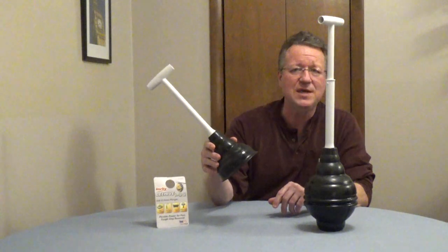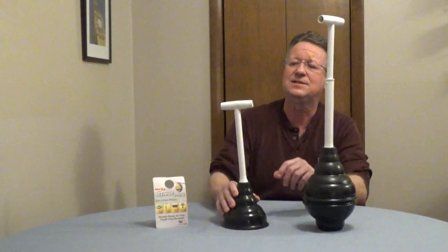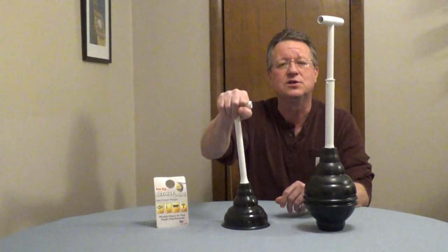This style is the Corky Beehive Mini. It has a very soft rubber so it flexes very easy and the T-handle gives you good control.